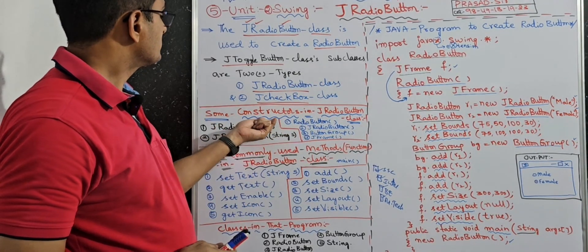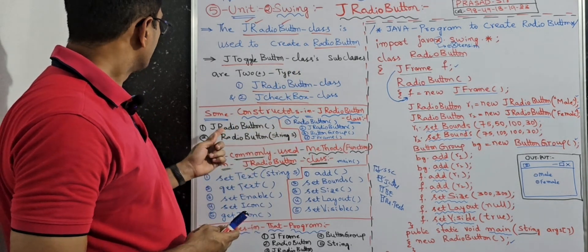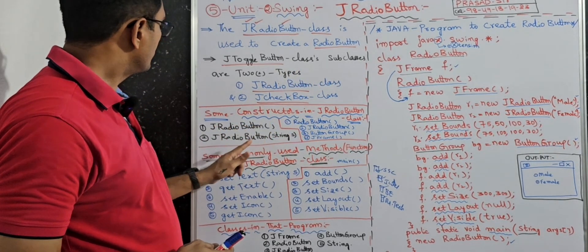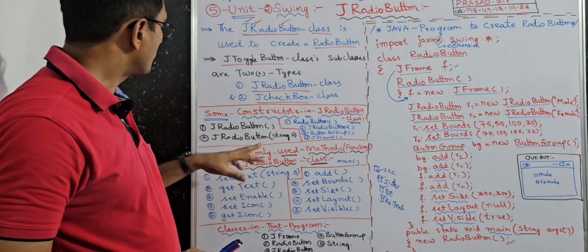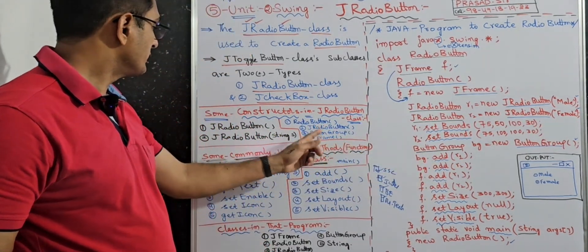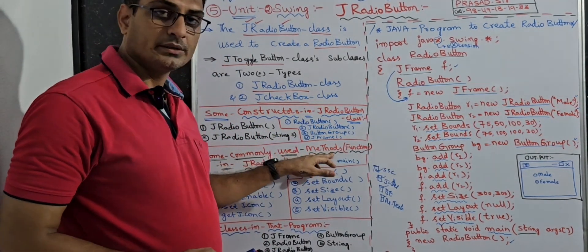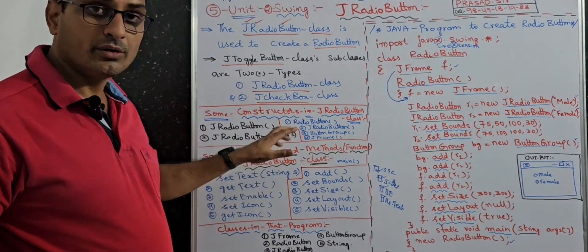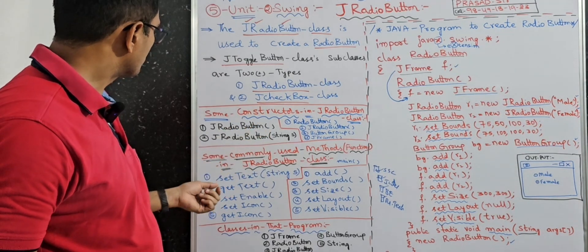In the JRadioButton class there are some constructors. Commonly used constructors are: JRadioButton with no parameters, and JRadioButton with String S parameter. Some commonly used methods in JRadioButton — we call them functions in C — are: setText(String s), getText(), setEnable, setIcon, and getIcon. Java is a case-sensitive programming language, so naming convention must be followed wherever necessary.